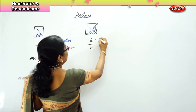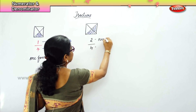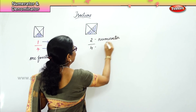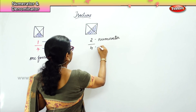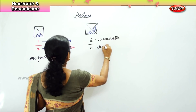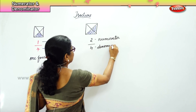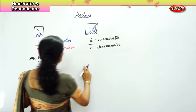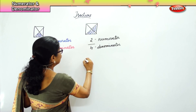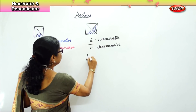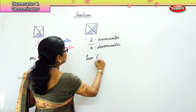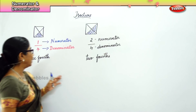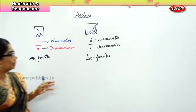What do we call this? Numerator. And we call this denominator. How do we write this? 2 fourths. You will write this as 2 fourths — that is 2 parts out of 4 parts.